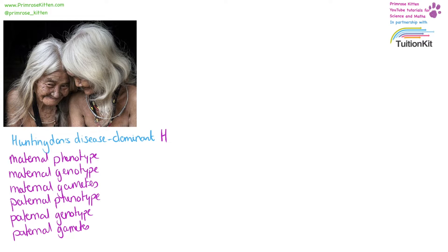Huntington's disease is a dominant disease, so the gene for Huntington's I'm going to call capital H. The mother's phenotype is going to be normal, which means her genotype is going to be lowercase h, lowercase h — so her gametes are going to be h, h.